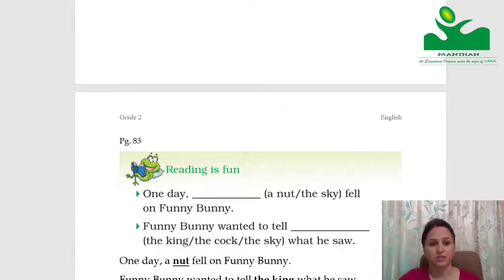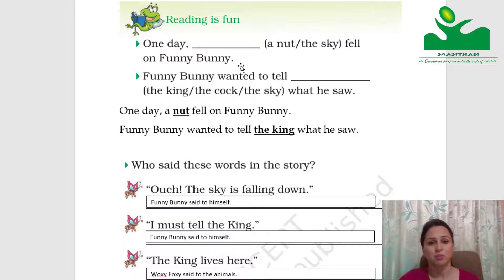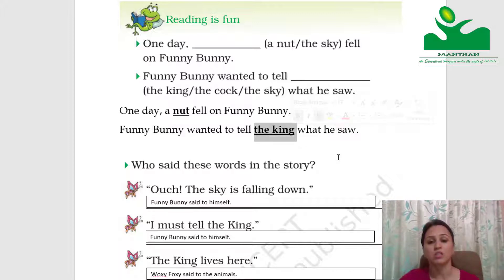Now this is from your book, page number 83, Reading is Fun. You have to fill in the blanks with the hint given in the brackets. One day, a nut fell on Funny Bunny. Funny Bunny wanted to tell the king what he saw — so: Funny Bunny wanted to tell the king what he saw.